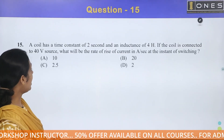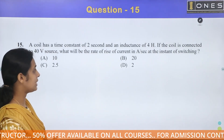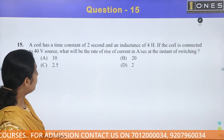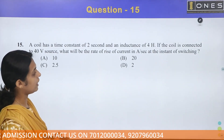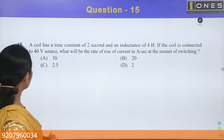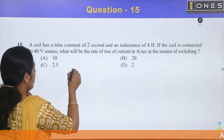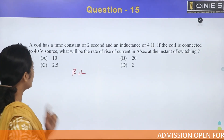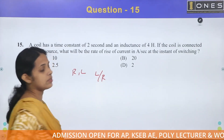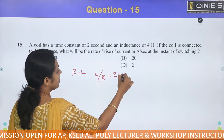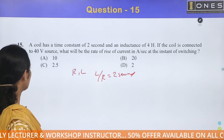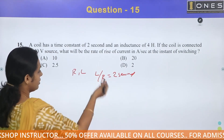Next question. A coil has a time constant of 2 seconds and an inductance of 4 Henry. If the coil is connected to a 40 volt source, what will be the rate of rise of current in ampere per second at the instant of switching? We have an RL circuit. The time constant is L by R, which equals 2 seconds.